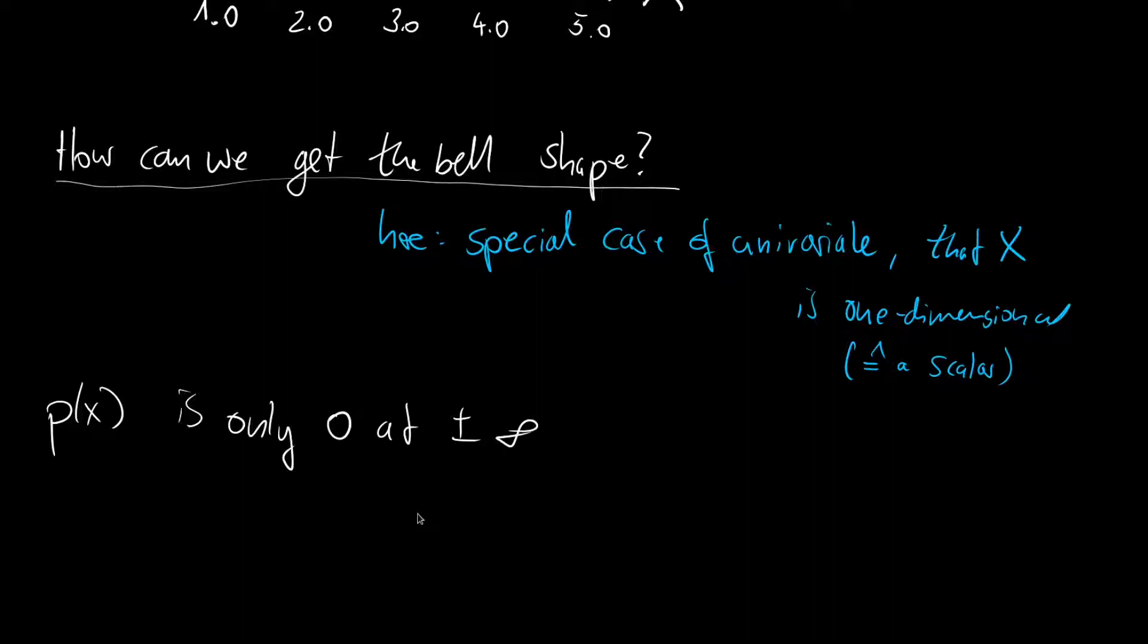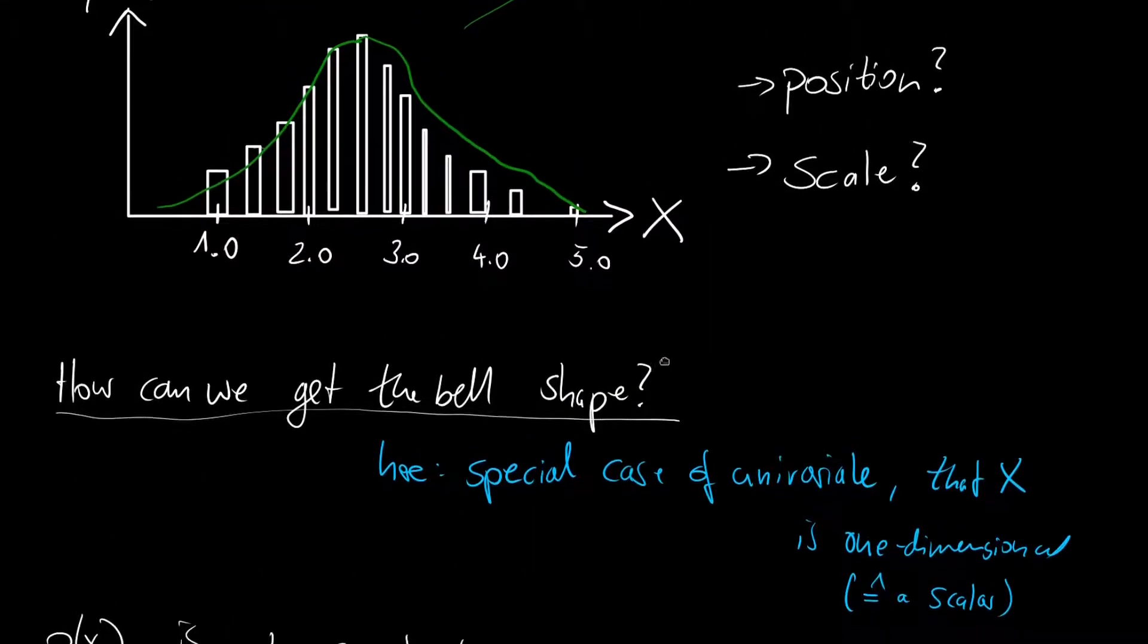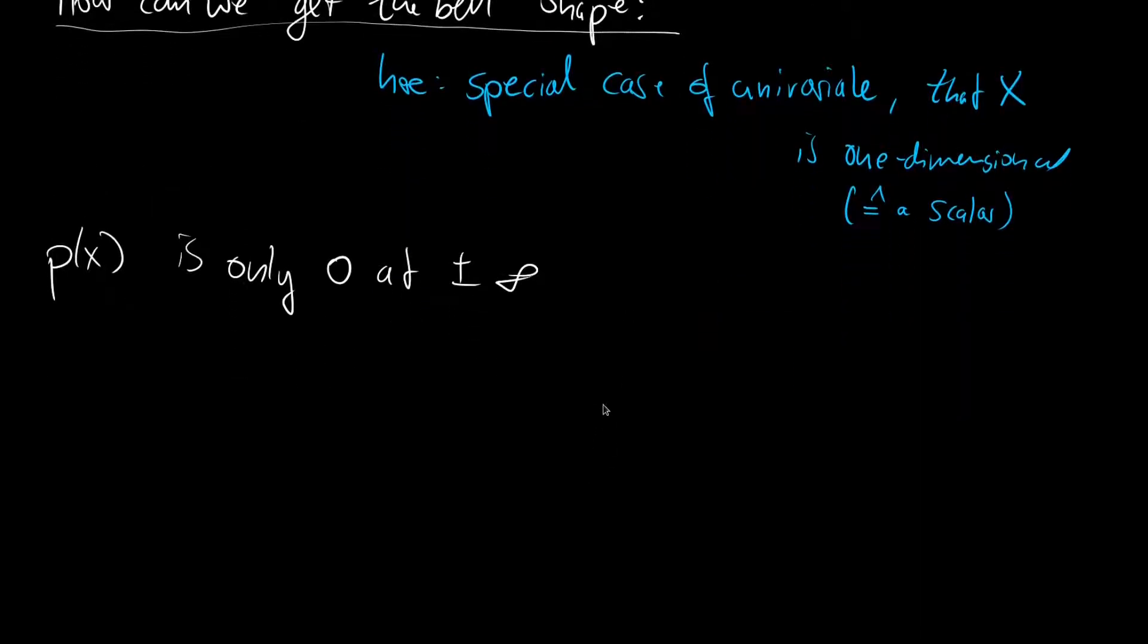But how can we model this? I mean you can think of different things like for example a parabola or you can think it's some sort of like cosines, combinations, whatever. But actually the simplest way to do this and also the correct way to do this is to use the exponential of a parabola or of a negative parabola. And we say p of x is proportional to the exponential of minus x squared.